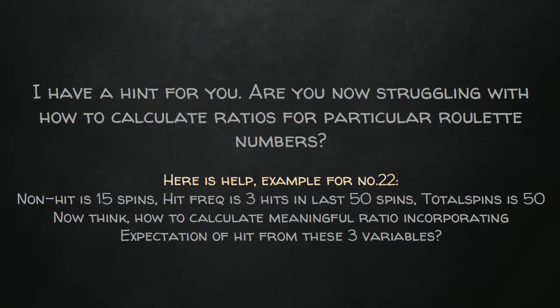My idea, my help for you, is then consider you have a non-hit of 15 spins from number 22, your hit frequency is three hits in last 50 spins. For example, if you evaluate 50 spins - you can evaluate 74 as I do - total spins is 50 obviously. Now you can say, okay, I have these three variables. How can I calculate the ratio? You can say, okay, I will take non-hit 15 spins, I will divide them by three and I receive something. Then I multiply them with 50 spins and I have my ratio.